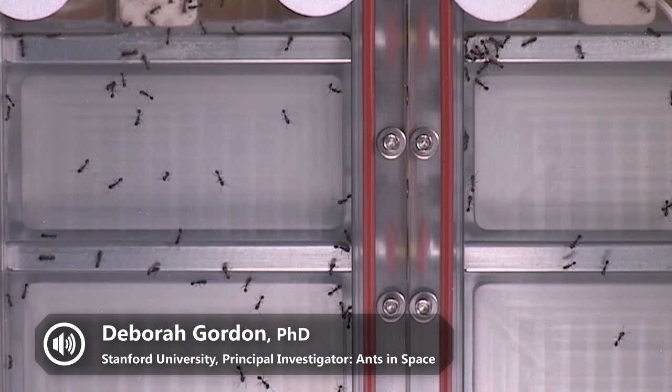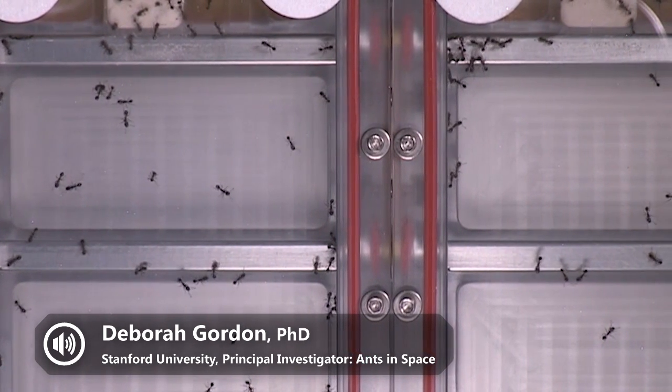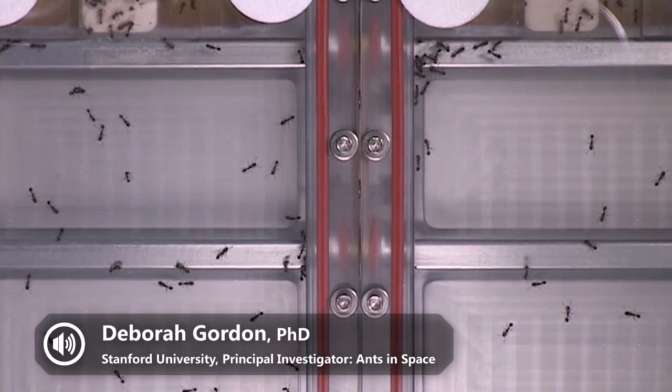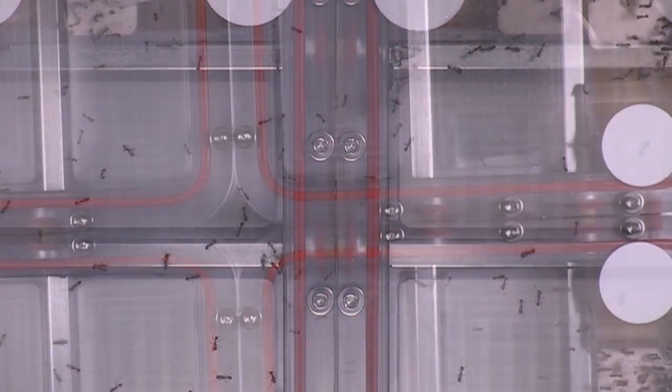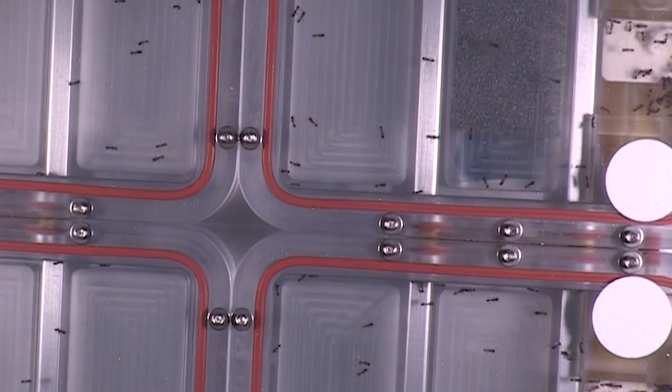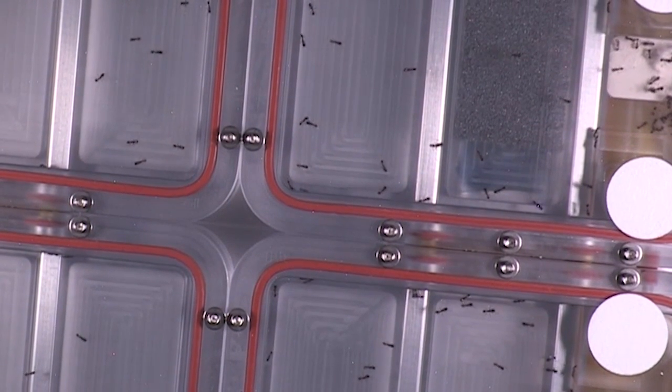This experiment is about expandable search networks. It's about how ants can adjust the shape of their paths to search a space in the best possible way, adjusting their searching to the number of ants and the size of the space.